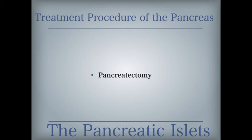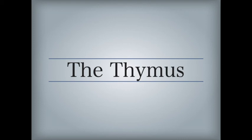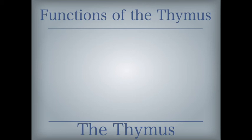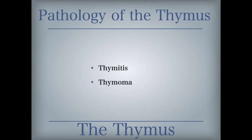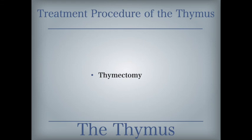Treatment includes a pancreatectomy, which is the surgical removal of the pancreas. The thymus is located near the midline in the anterior portion of the thoracic cavity, posterior to the sternum and slightly superior to the heart. Note that the word part thyme-thymo means thymus but also means relationship to the soul or emotions. The thymus plays an important role in the immune system. Thymosin stimulates the maturation of lymphocytes into T-cells of the immune system. Thymitis is an inflammation of the thymus gland, thymoma is a usually benign tumor derived from the tissue of the thymus, and a thymectomy is the surgical removal of the thymus gland.